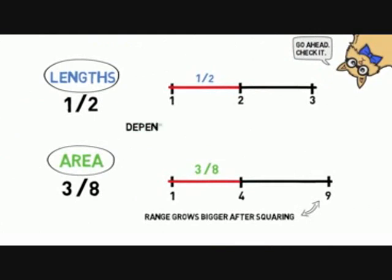Because we saw that the size of a range of possibilities depends on how you describe it. Using length, we get one answer, 1 half, in the square factory example. Using area, we get a different answer, 3 eighths in that example.